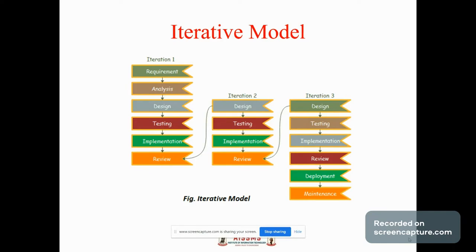Every release of the iterative model finishes in an exact and fixed period that is called as iterations. The iterative model allows the accessing earlier phases in which the variations made respectively. The final output of the project renewed at the end of the software development life cycle process.